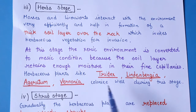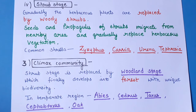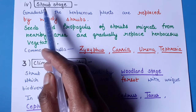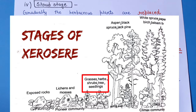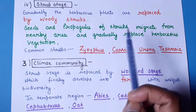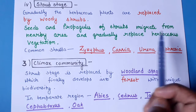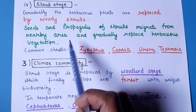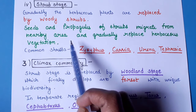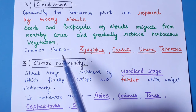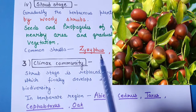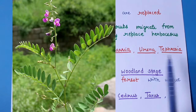The fourth seral stage is the shrub stage, in which the herbaceous plants are replaced by woody shrubs. Seeds and propagules of shrubs migrate from nearby areas. Common shrubs available here are Ziziphus, Cassia, Urena, and Tephrosia.